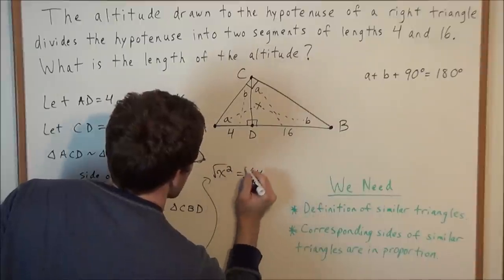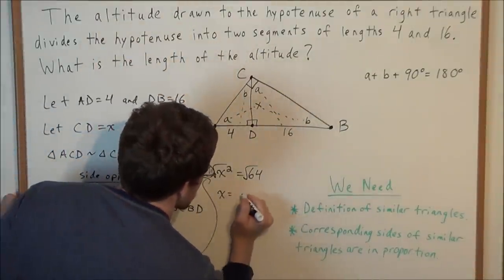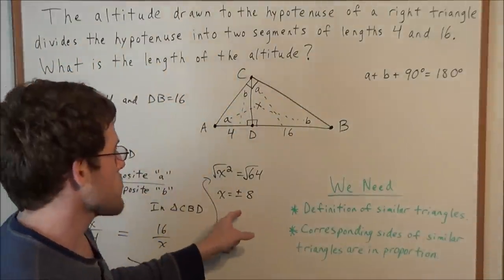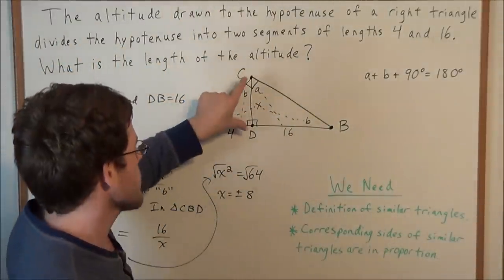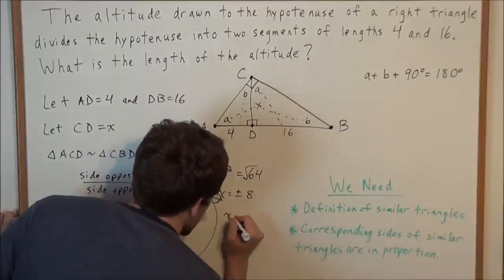So now we take the square root of both sides, and now this tells us that x is equal to plus or minus 8. So now we're going to reject the negative, because when we're talking about distance, in this case the length of the altitude, we can't have negative distance.